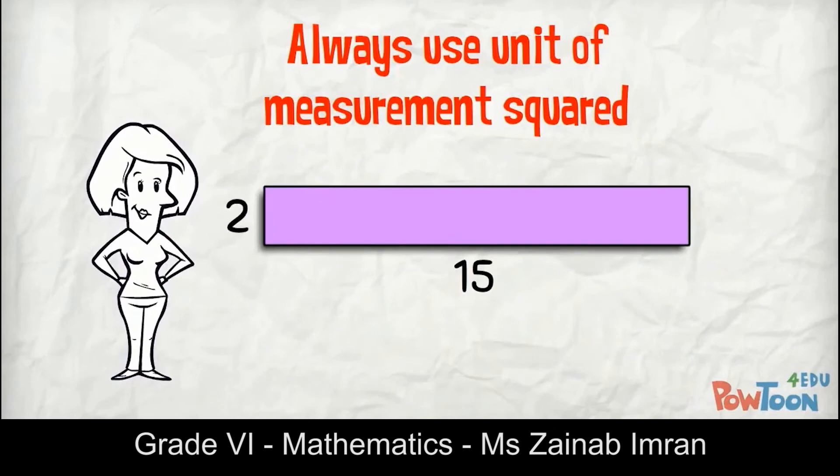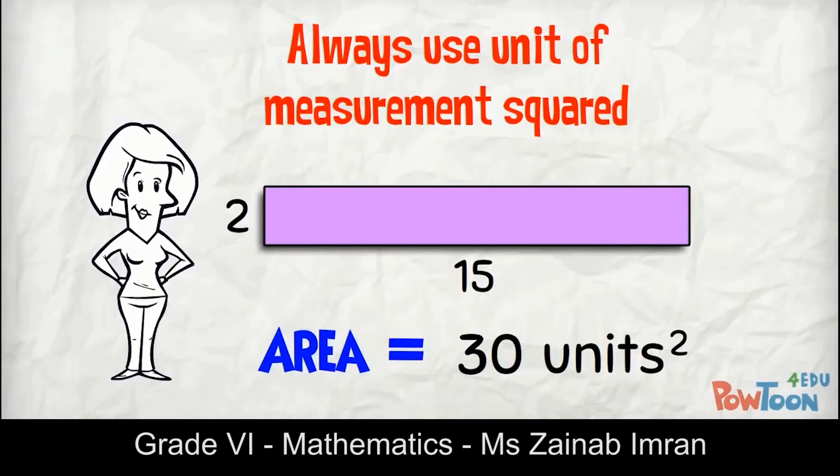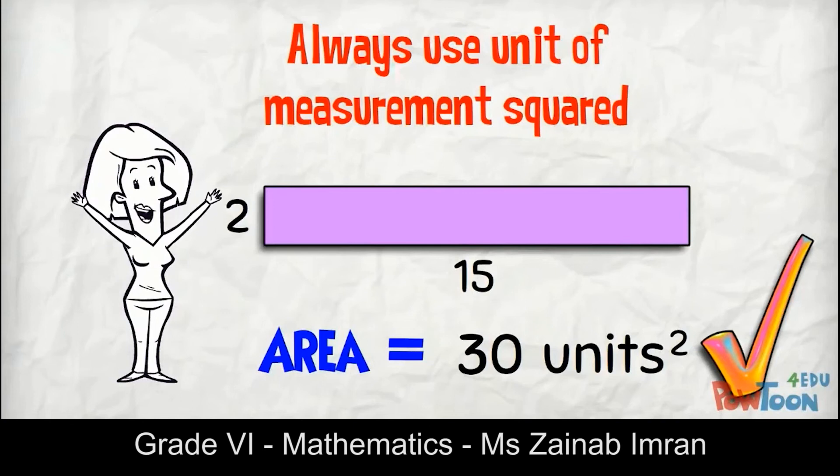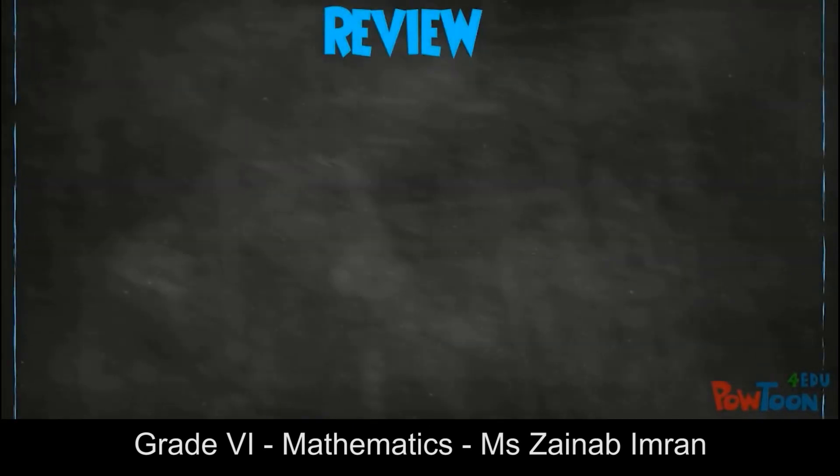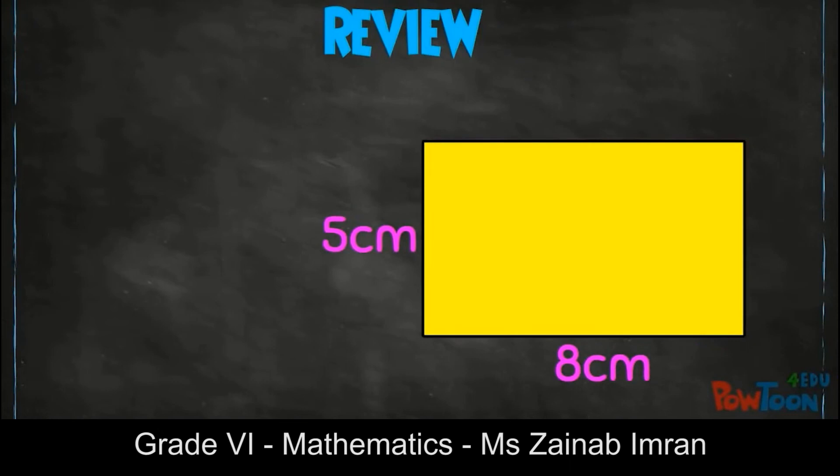Now in your previous classes you have learned about the properties of a rectangle. Properties of a rectangle are like: opposite sides of a rectangle are equal. For example, if AB is 5 centimeters, CD is also 5 centimeters. BC is 3 centimeters, AD is also 3 centimeters.